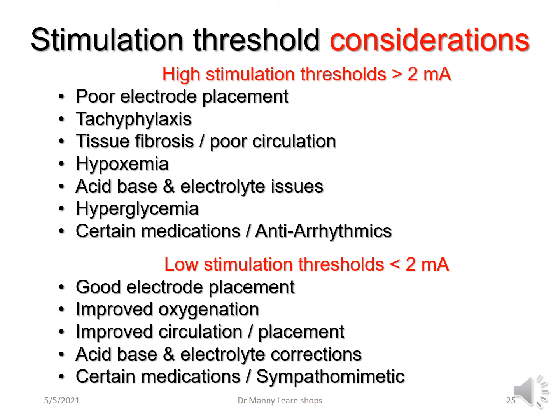Low stimulation thresholds — less than 2 milliamps — basically mean electrode placement is good, circulation and oxygenation have improved, electrode placement has been optimized, acid-base and electrolyte corrections have been made, and certain medications such as sympathomimetics like epinephrine could increase blood supply, improve transmission of the current, and provide low stimulation thresholds.